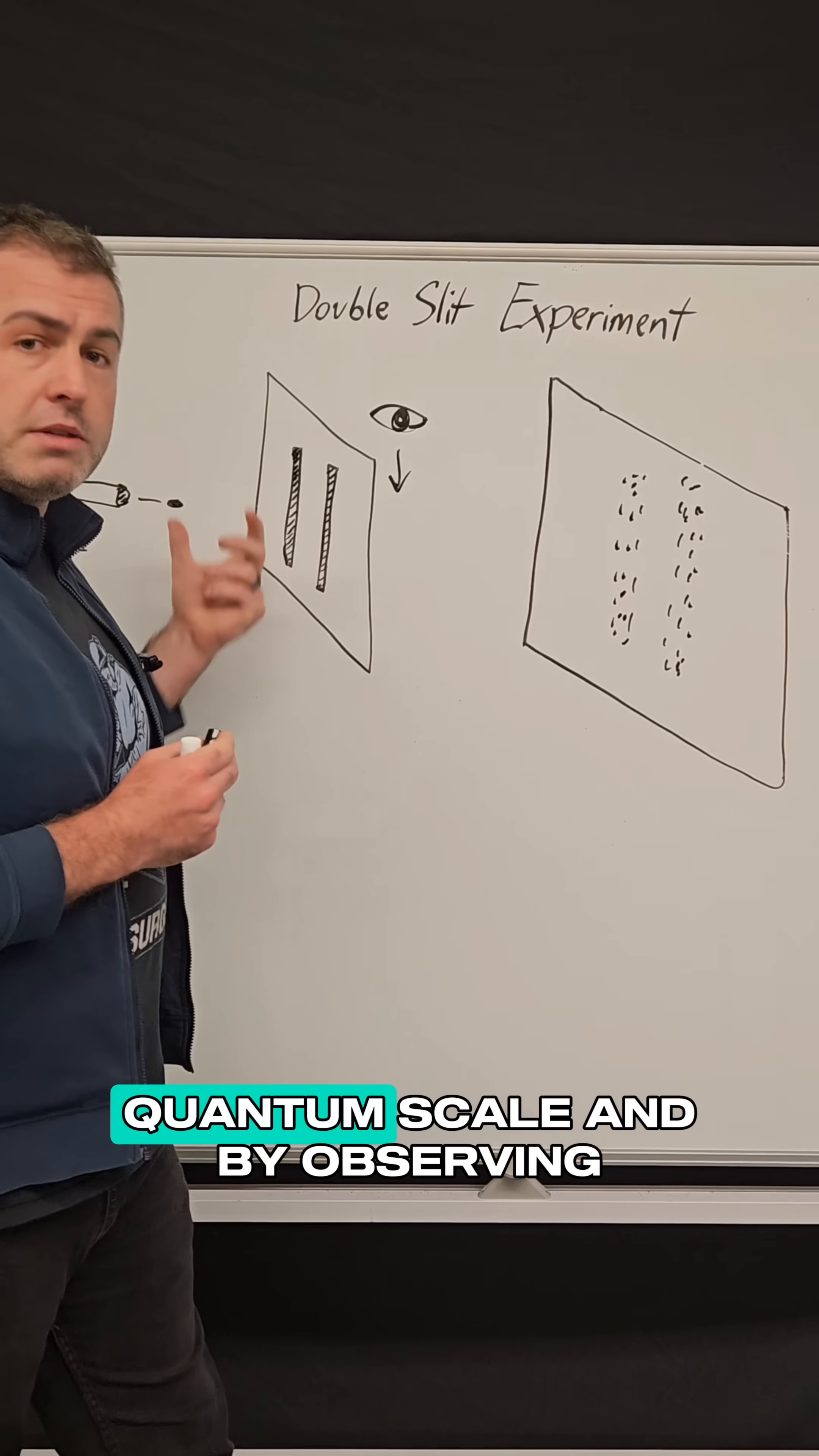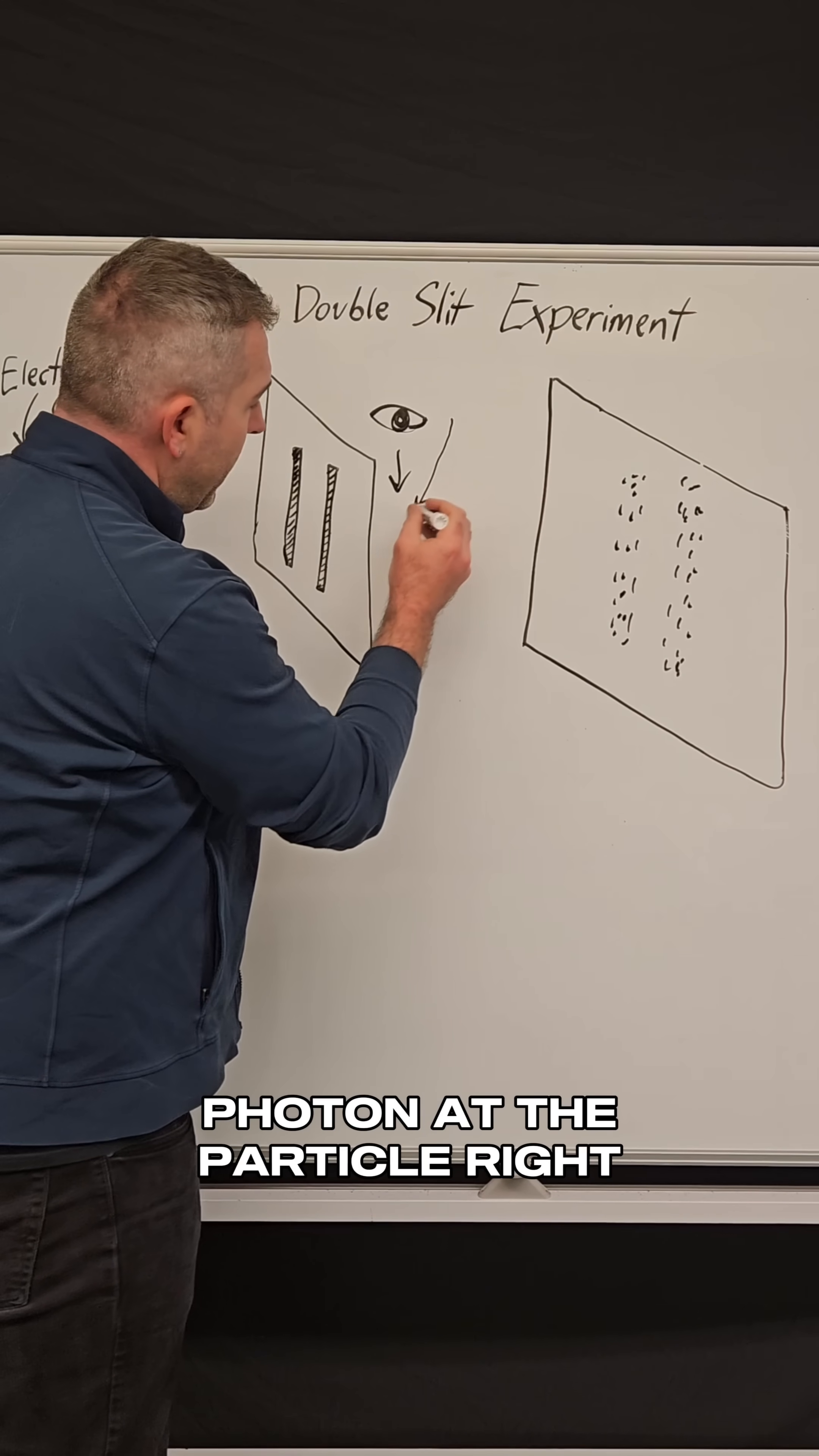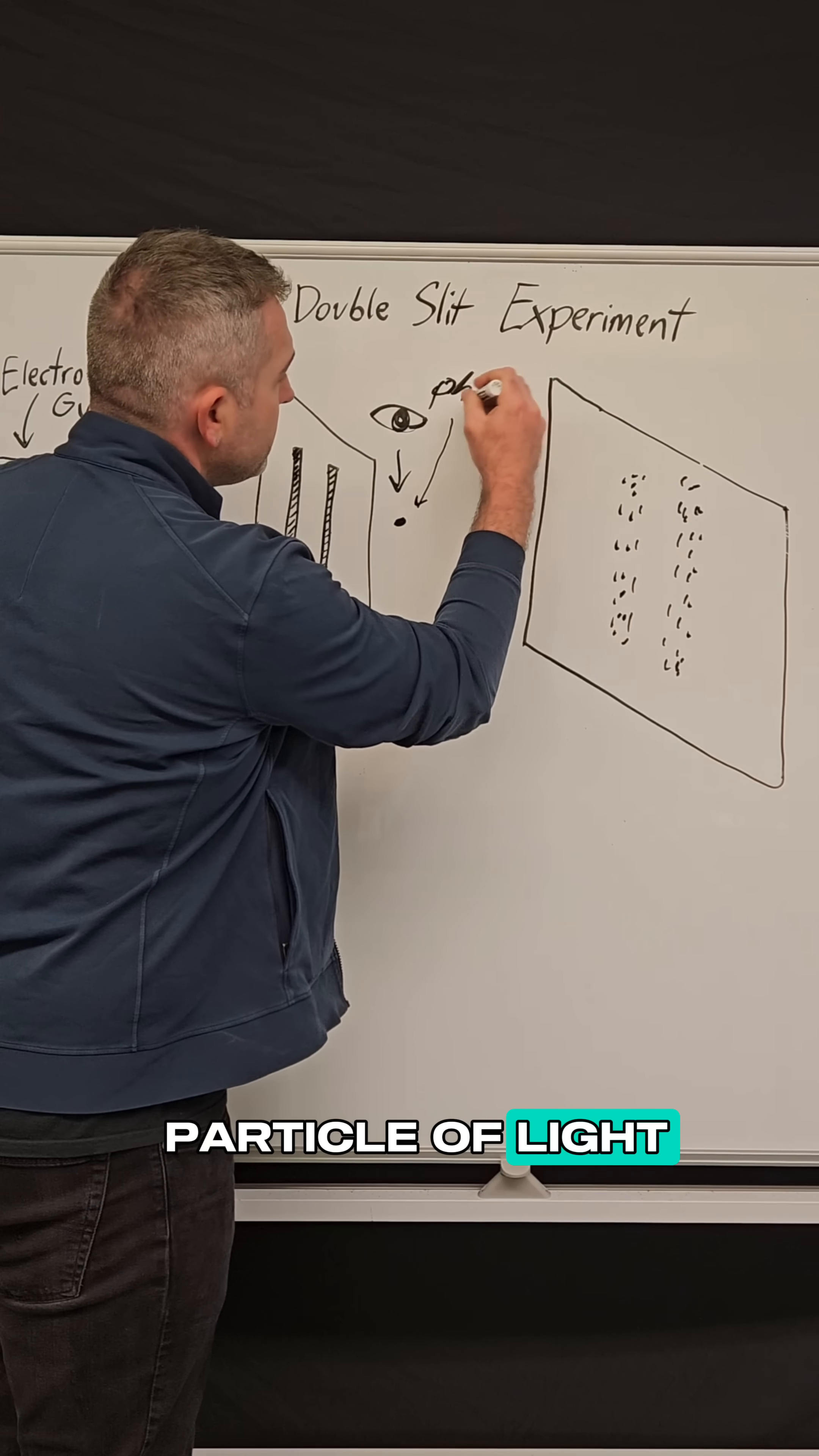this is on a quantum scale. And by observing, we're actually firing a photon at the particle, right? A photon is a particle of light.